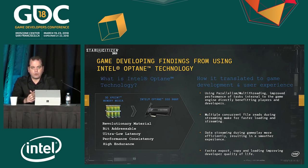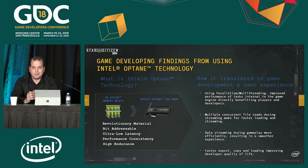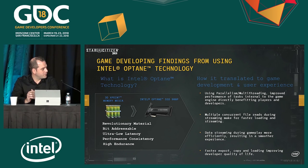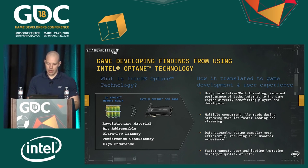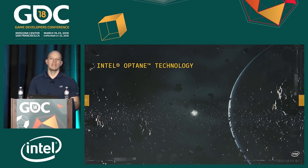Finally, we'll go into how it improved our build process. We're building up to 1.3 terabytes of source data at one time, so it was really important that we had a powerful storage device. I'll go over more details on the Intel Optane technology.